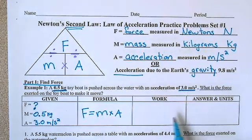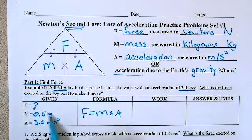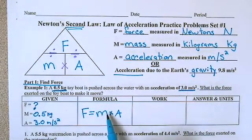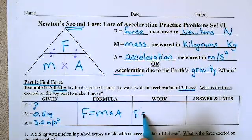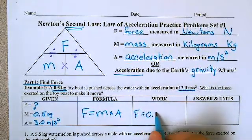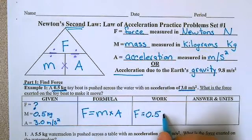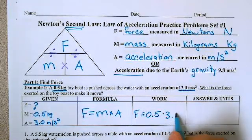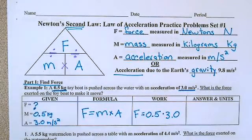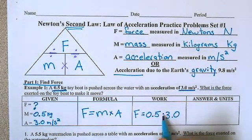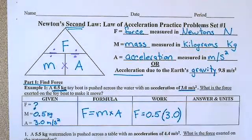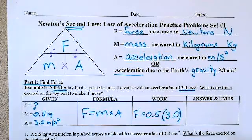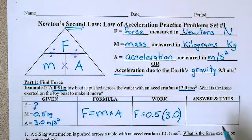So over here we're going to show our work. I'm going to take these numbers and plug it into our formula. So force is what we're looking for. The mass is 0.5 and we're going to multiply that by 3.0. You can either use an x to represent multiplication, a dot to represent multiplication, or you can put it in parentheses. Whichever way your math teacher teaches you is probably the best way to represent this formula.